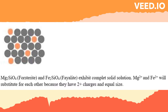Simple Substitution: When ions of equal charge and nearly equal size substitute for one another, the solid solution is said to be simple. Generally, if the sizes of the ions are nearly the same, the solid solution can occur over the complete range of possible compositions, and the solid solution series is said to be complete.